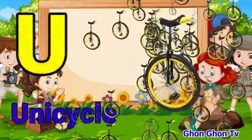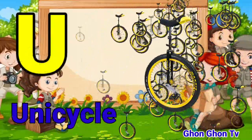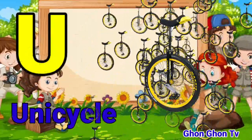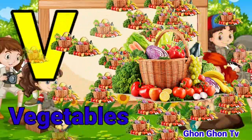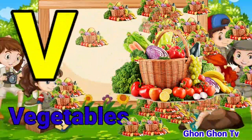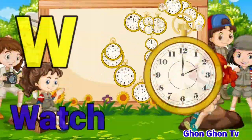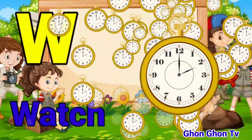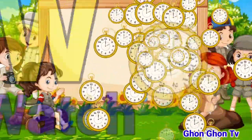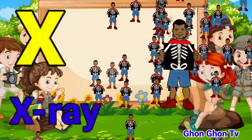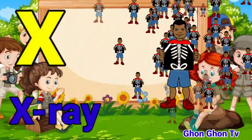U for unicycle. V for vegetable. W for watch. X for x-ray.